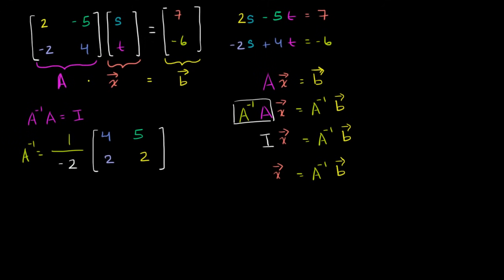And so A inverse is going to be equal to, let's see, this is negative one-half times four is negative two. Negative one-half times five is negative two point five. And negative one-half times two is negative one. So that's A inverse right over here.